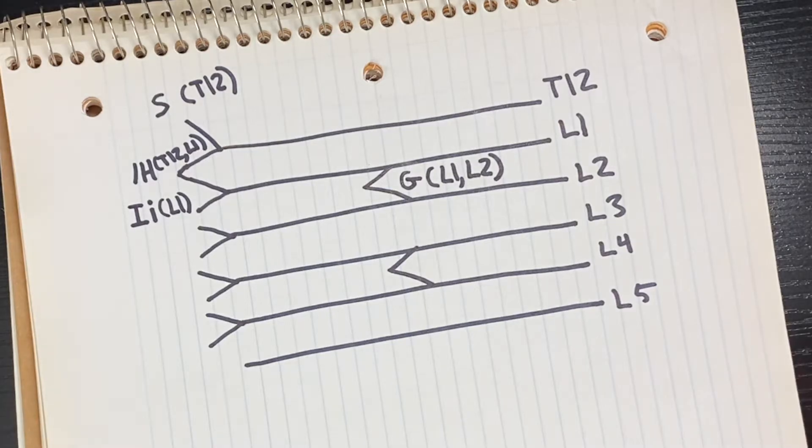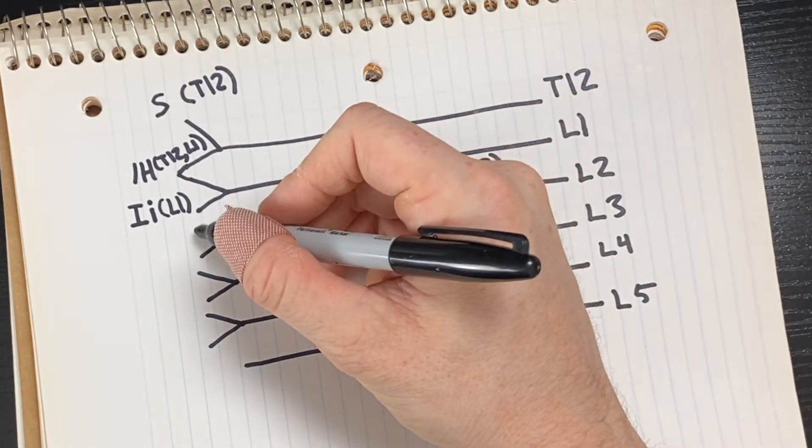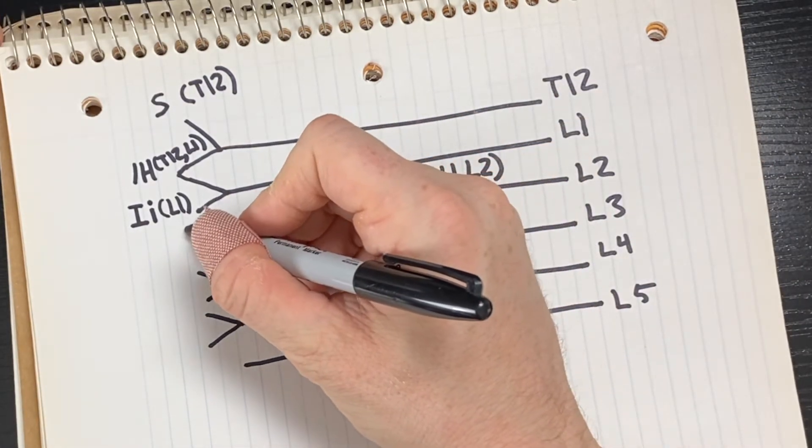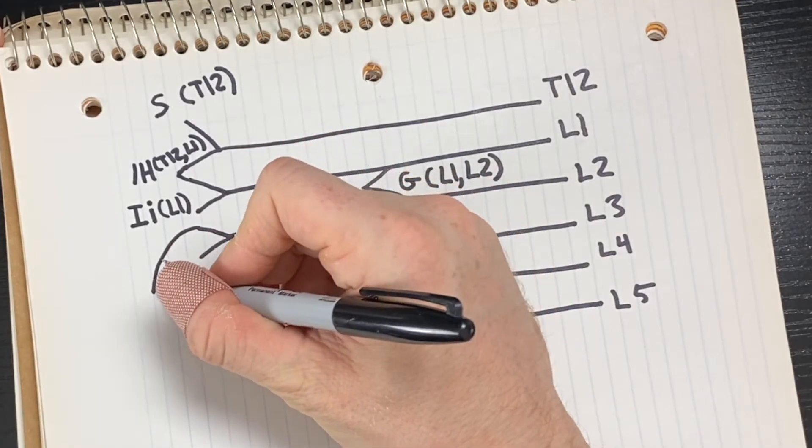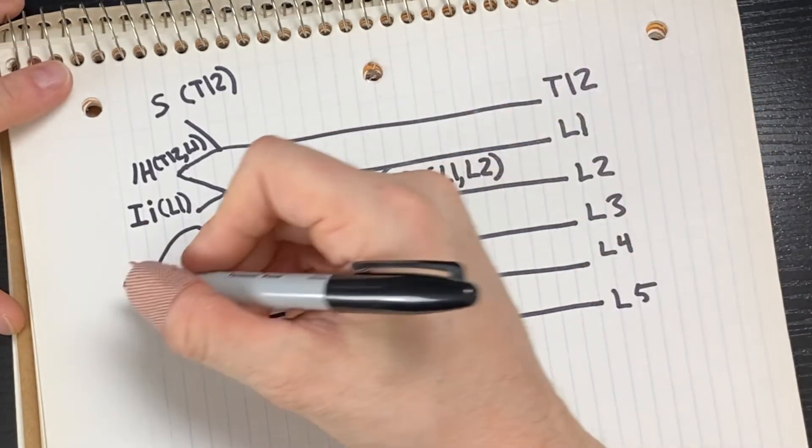Then we're going to go back over to the left and we're going to take the top branch from L2 and L3 and draw it down just like this and have them attached together, and this is going to be for the lateral femoral cutaneous nerve.